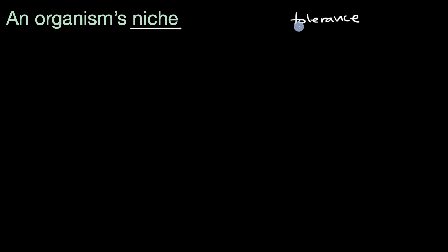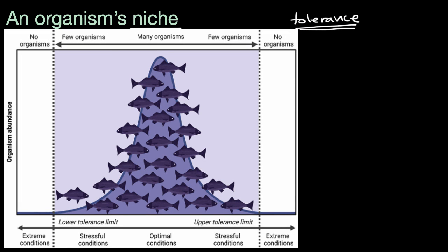A tolerance is how well you can tolerate something. For a given type of organism, we can describe what conditions we are likely to find them in. In this diagram, we're thinking about a certain type of fish. Maybe these conditions are the water temperature, but it could also be salinity, acidity, or some other factor. There's going to be some optimal conditions for this type of fish, and under those optimal conditions you're going to have a lot of abundance of that fish.